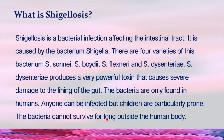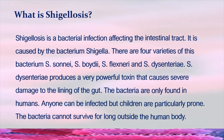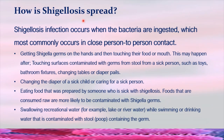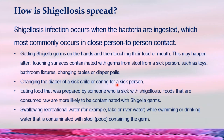The bacteria are only found in humans. Anyone can be infected, but children are particularly prone. The bacteria cannot survive for long outside the human body. Shigellosis infection occurs when the bacteria are ingested, which commonly happens through close person-to-person contact — getting Shigella germs on the hands and then touching food or mouth. This may happen after touching surfaces contaminated with germs from the stool of a sick person, such as toys, bathroom fixtures, changing tables, or diaper pails. Changing the diaper of a sick child or caring for a sick person can also result in infection.